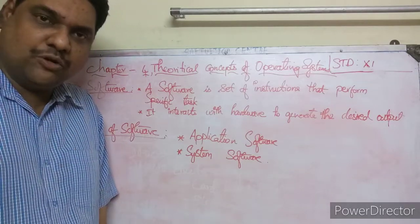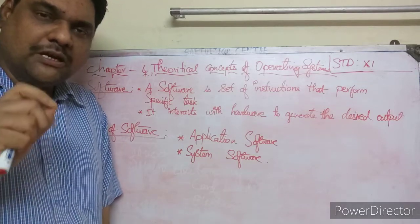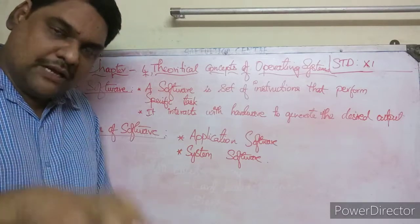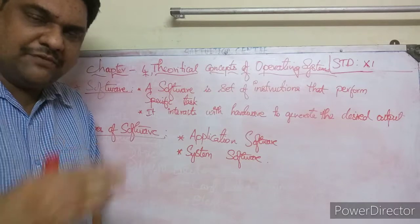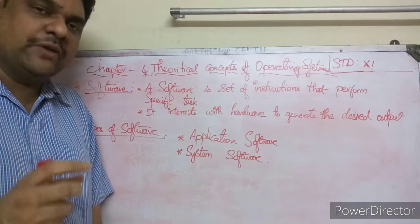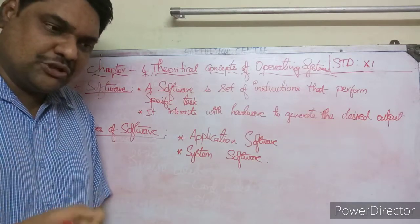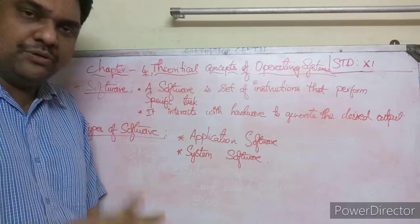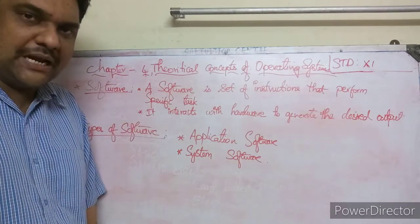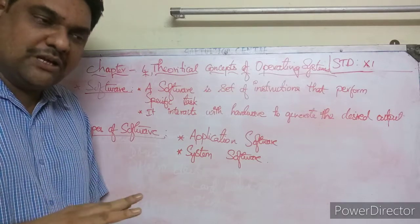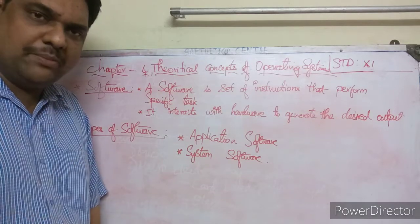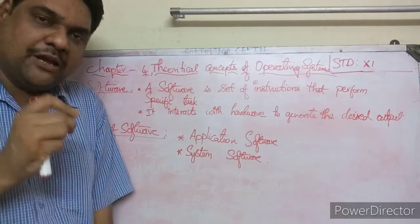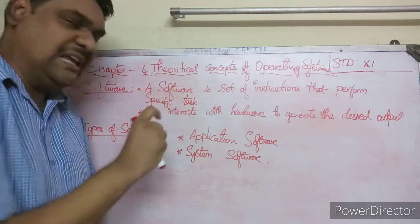Hardware refers to the physical components — mouse, keyboard, monitor, CPU, and the parts inside the CPU. Those are hardware. Software means instructions which make the hardware work.